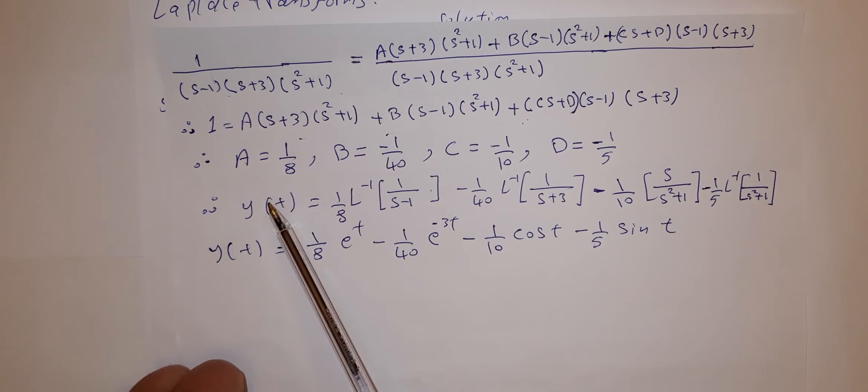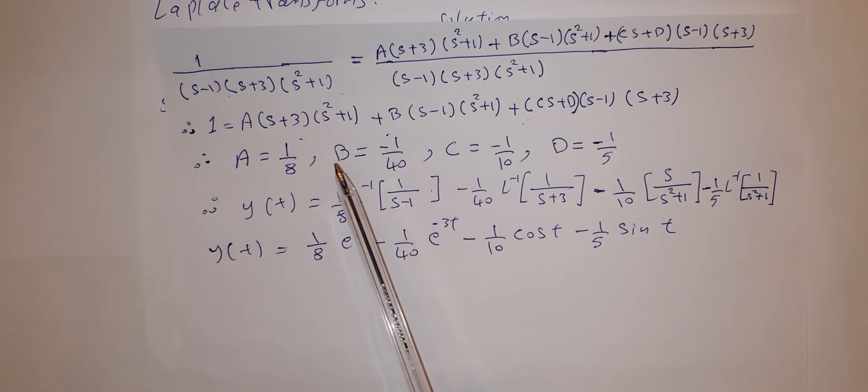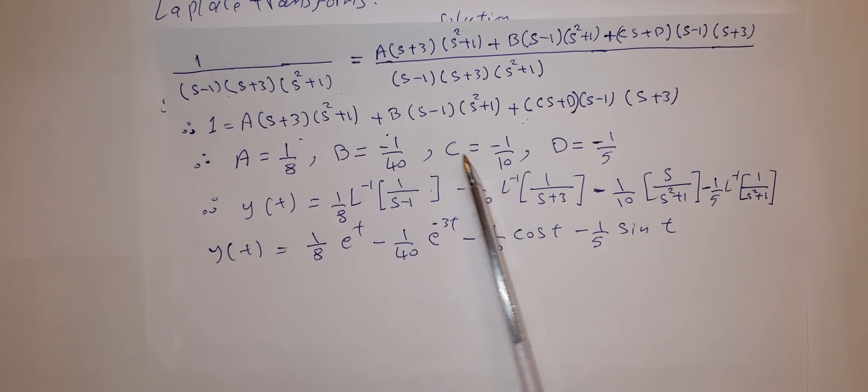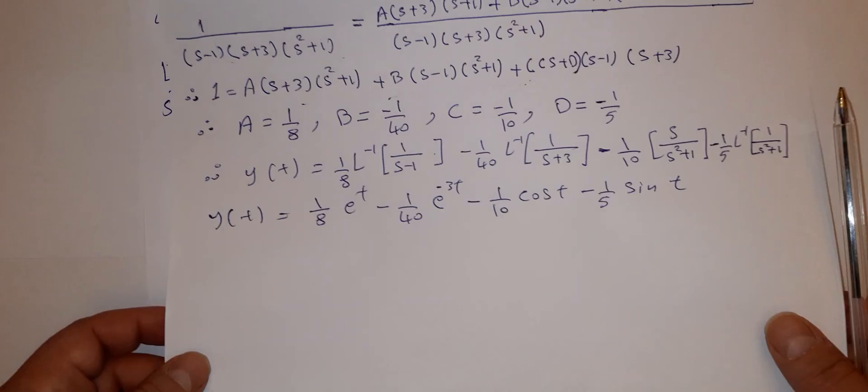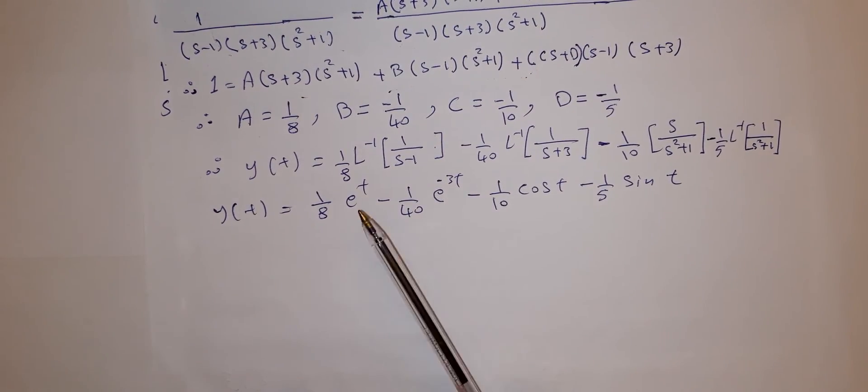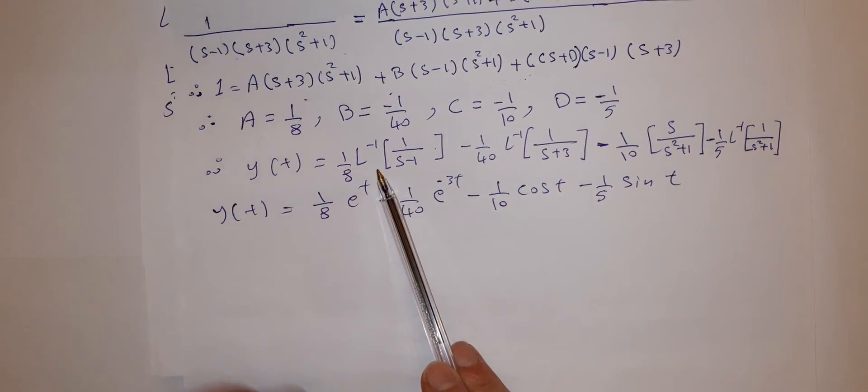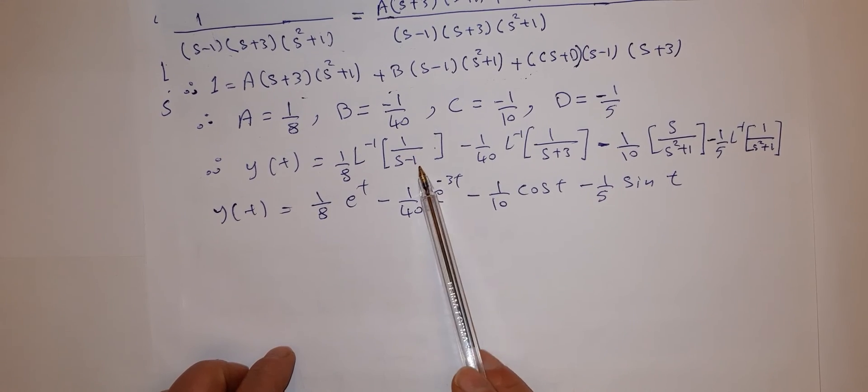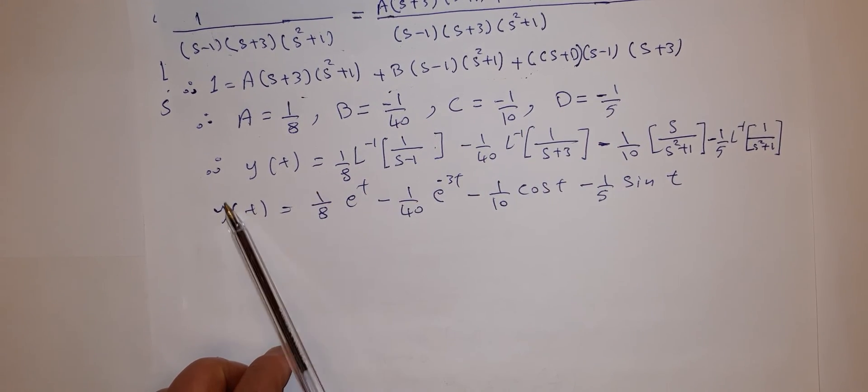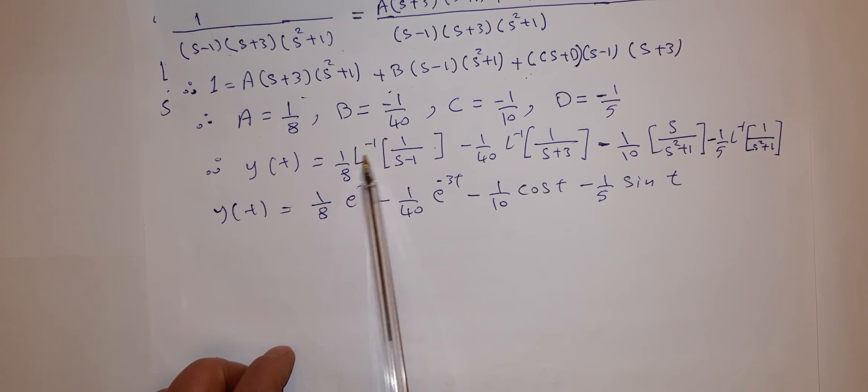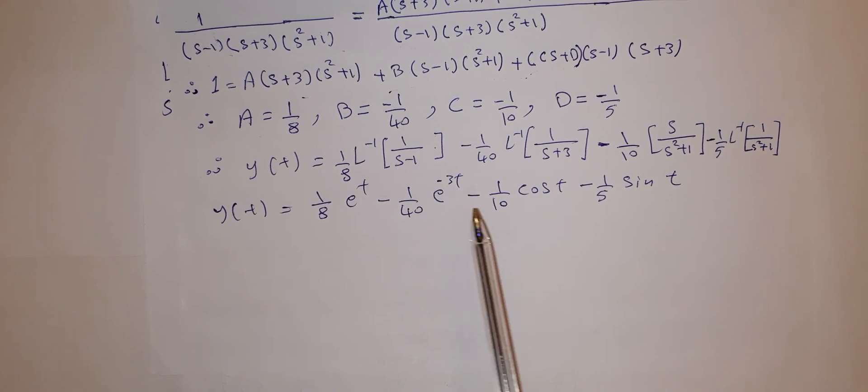And now we have y of t after substituting A, B, C, and D here. So y of t equals 1 over 8 Laplace inverse 1 over s minus 1. After substituting A, B, C, D, we have y of t equals 1 over 8 Laplace inverse 1 over s minus 1, which using Laplace transform table is e to the power t.